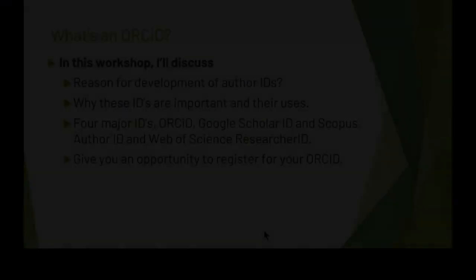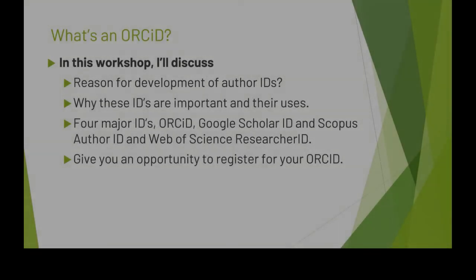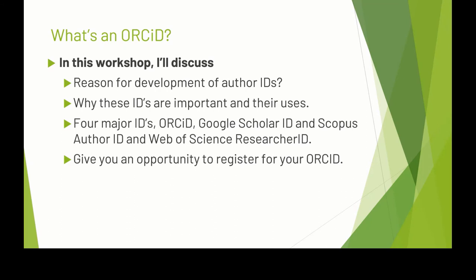The format of the workshop will basically be a workshop. I'll have a short presentation about the various author IDs, and then there'll be time at the end for folks to actually register for an ORCID. I'll discuss the reason for the development of author IDs and why these IDs are important, covering four major IDs: the ORCID, Google Scholar ID, Scopus Author ID, and Web of Science Researcher ID, with examples of each. I'll also give folks an opportunity at the end to create and register for your ORCID.